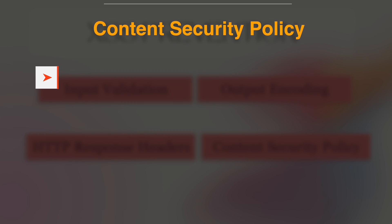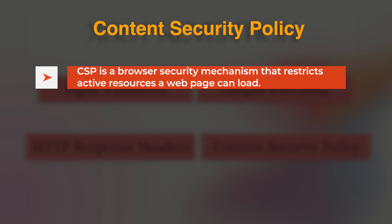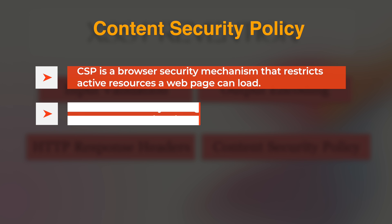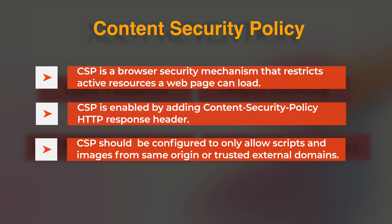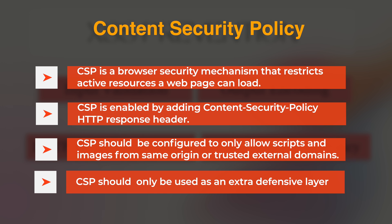Content Security Policy is a browser security mechanism that restricts the active resources that a web page can load. CSP is enabled by adding the Content-Security-Policy HTTP response header and should be configured to only allow scripts and images from the same origin or trusted external domains. If an attacker manages to manipulate the application to return malicious JavaScript code to users, CSP could prevent XSS exploitation. However, CSP should only be used as an extra defensive layer and never be trusted as the only defensive mechanism, since an attacker might be able to bypass it using policy injection techniques.